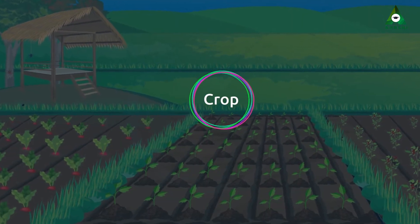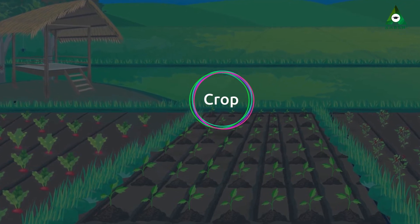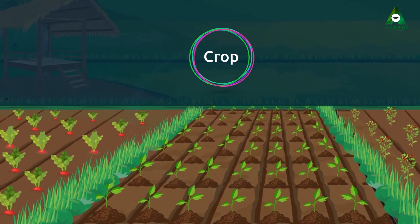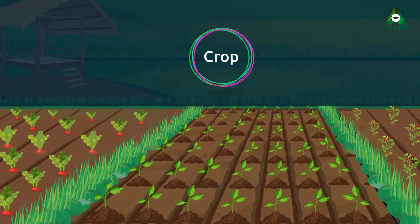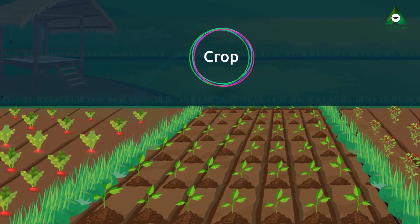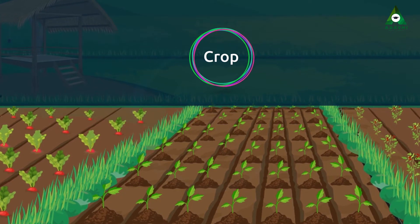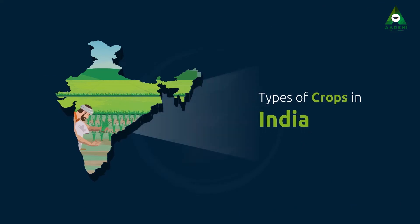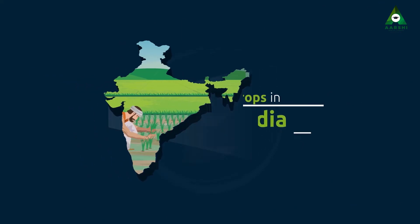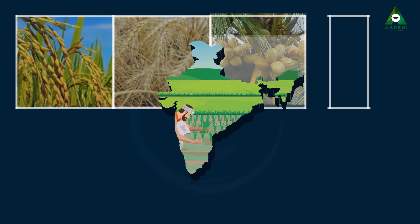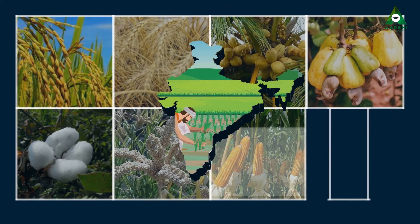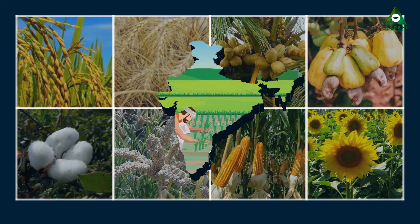Crop. When plants of the same kind are grown and cultivated in one place on a large scale, they are called a crop. Types of Crops in India. India is a vast country where diverse practices of farming are seen in different parts, but crops in India can be divided into two main types.